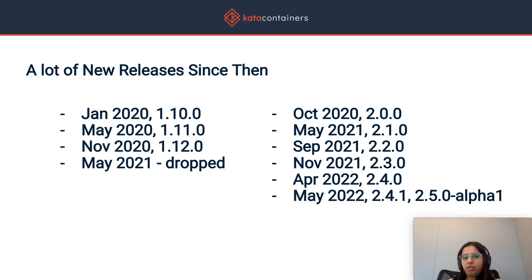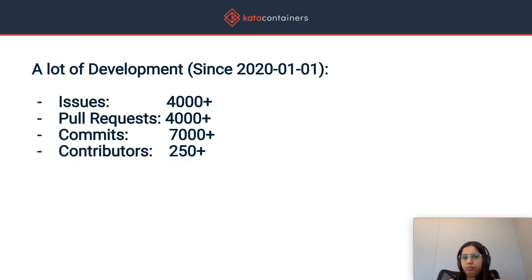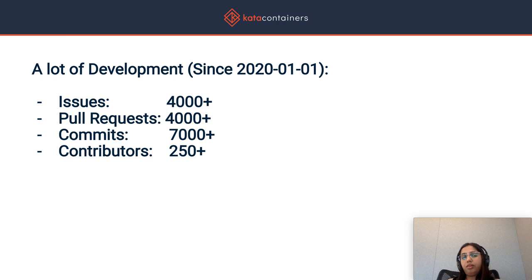As of May 2021, our last release was 2.4.1 and the alpha release for 2.5.0. If we take a look at the progress we have made since January 2020, we have seen impressive growth in the number of contributions from several organizations. We are also seeing a lot more diversity in contributions as more and more people are adopting Kata and using it in production. We've seen a good increase in pull requests as well as healthy discussions around what should go into the next Kata release.